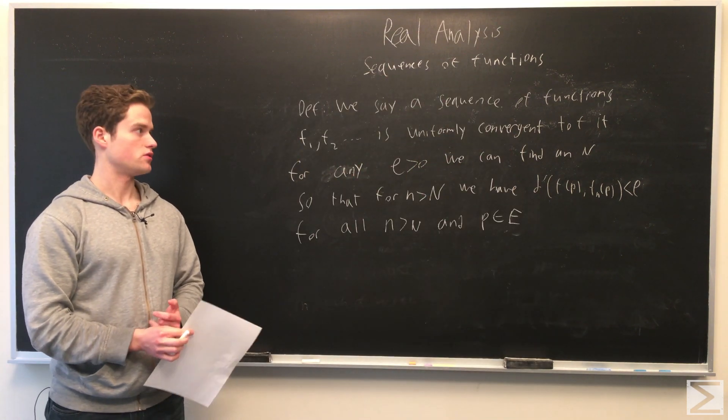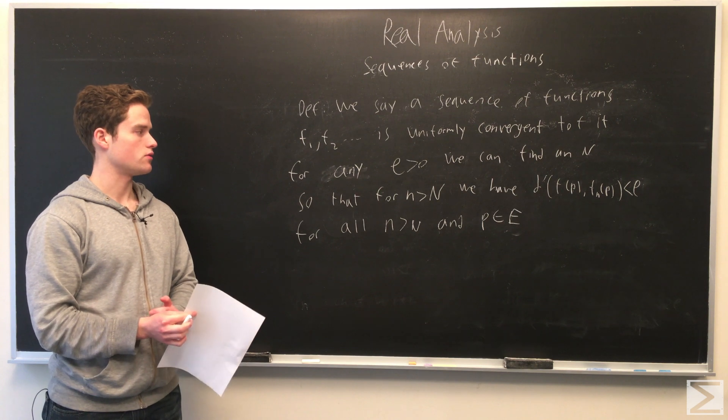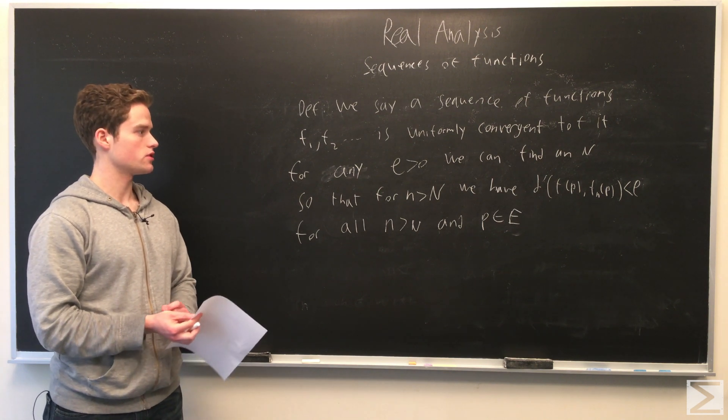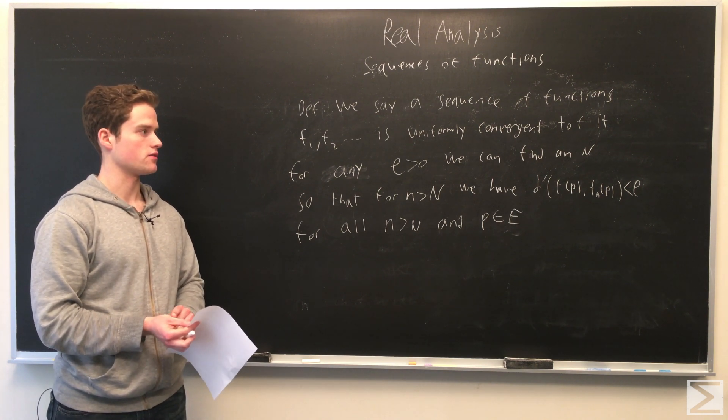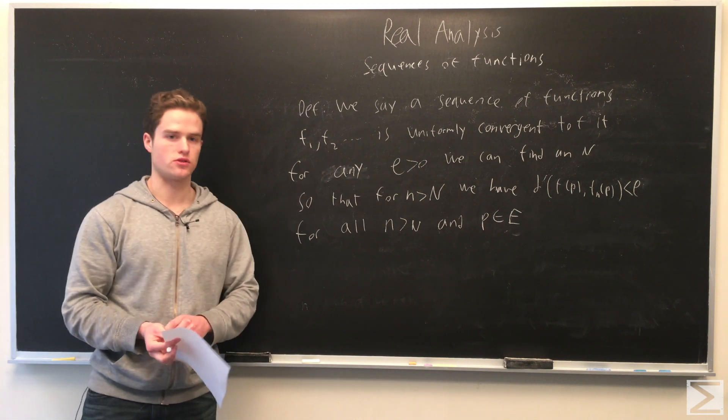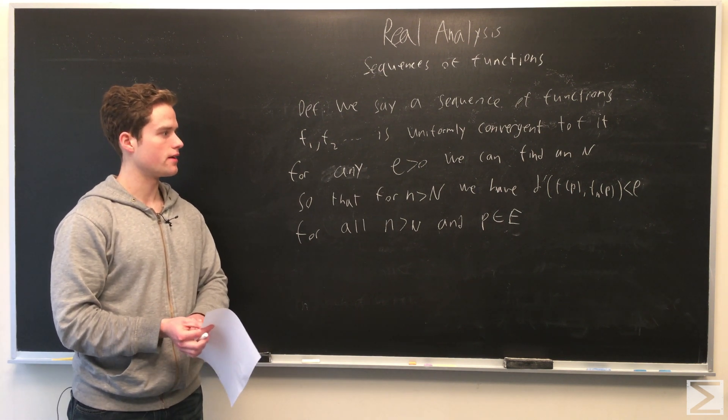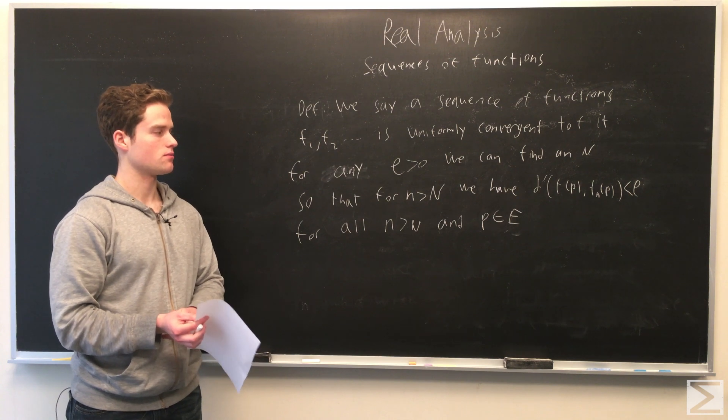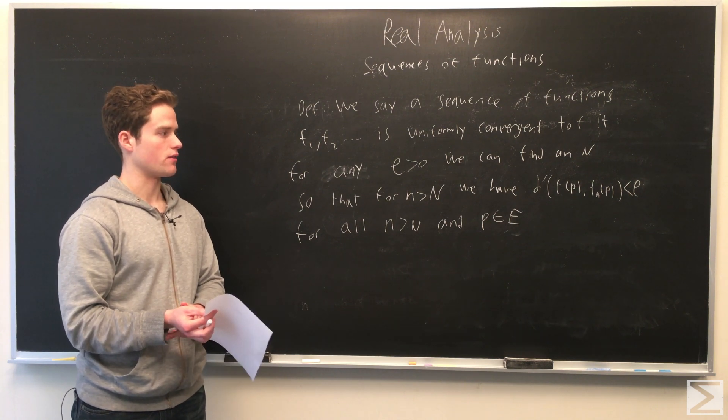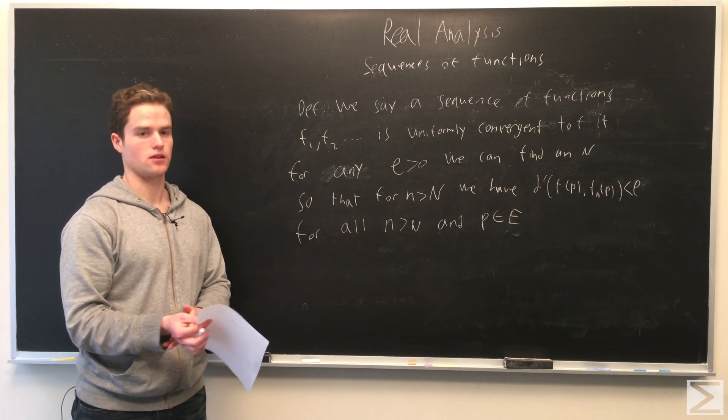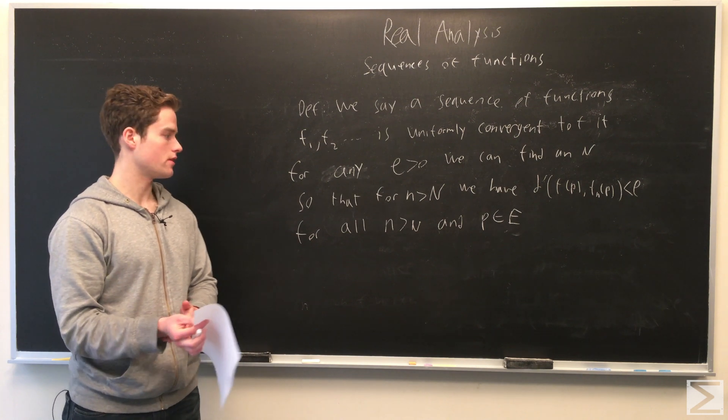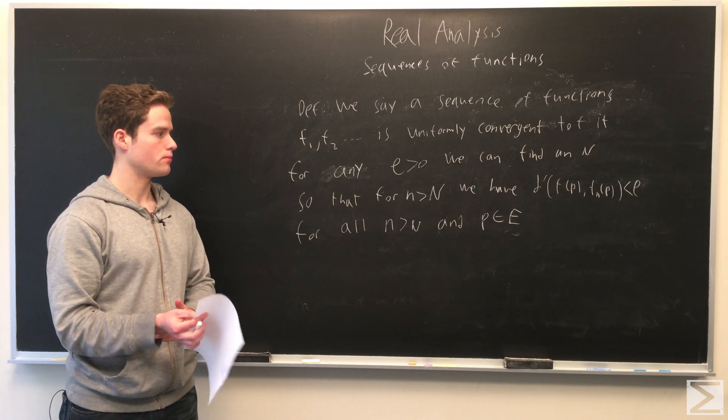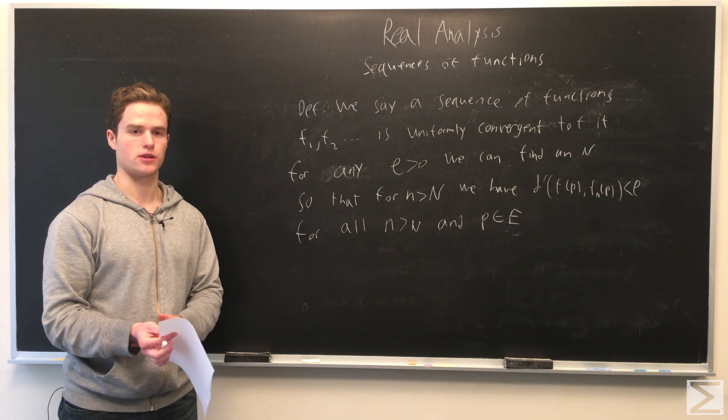We say a sequence of functions is uniformly convergent to some function f if it converges and given any epsilon greater than zero, we can find some positive integer N such that for n greater than N, the distance between f(p) and f_n(p) is less than epsilon for all n greater than N and all p in our metric space E.